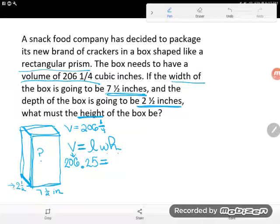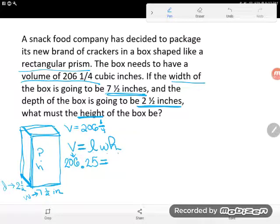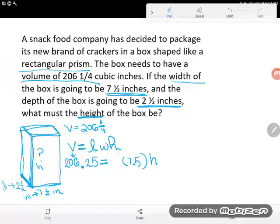Now notice they didn't name anything length. They said this was my width—7½ was my width—and 2½ was my depth, and the unknown was my height. So I can see that I know my W, my width is 7.5, and I can see that height is the thing I don't know.